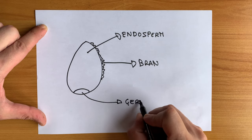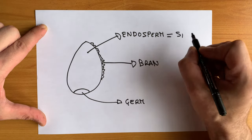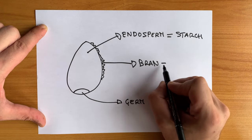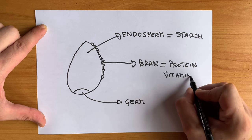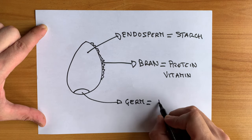Let's start from the grain, which contains three parts. The endosperm is 83% of the grain and is the source of white flour. The bran, which is the outer skin, contains protein and vitamins. And the germ, which contains healthy fats.